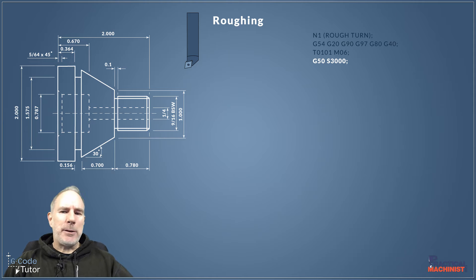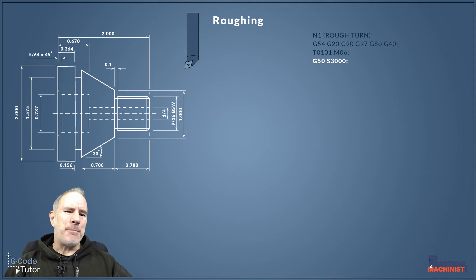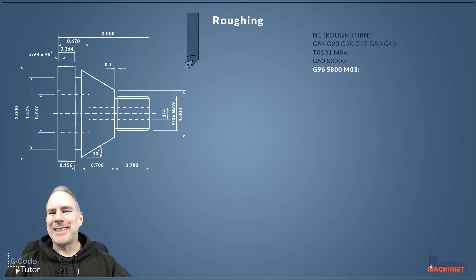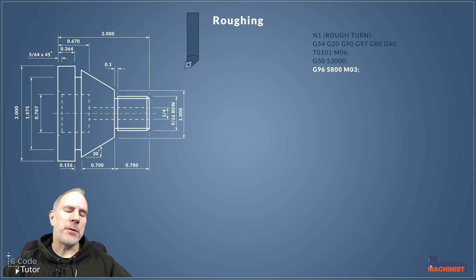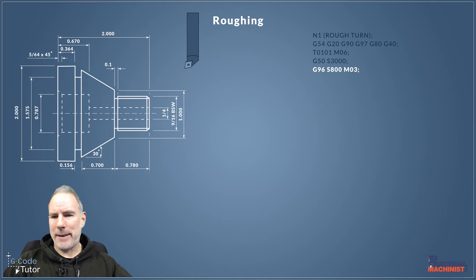G50 is our spindle speed clamp — this stops the machine going above 3000 RPM, designated by the S value. We need that clamp because we are using G96, which is constant surface speed. No matter what diameter we're cutting, the material speed as it hits the tool remains the same. G96 gives us a better finish and more accuracy, and it's especially useful for roughing because our diameters are changing quite rapidly.